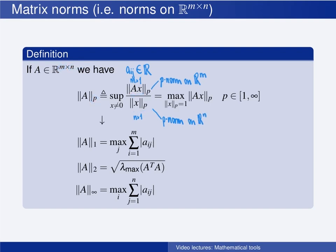We divide the norm of Ax by the norm of x, and then we take the supremum over all non-zero x's. It is possible to show that this is equivalent to finding the maximum of the p-norm of A times x when the p-norm of x is identically 1. This is the general definition of the p-norm, which holds for any value of p from 1 to infinity.